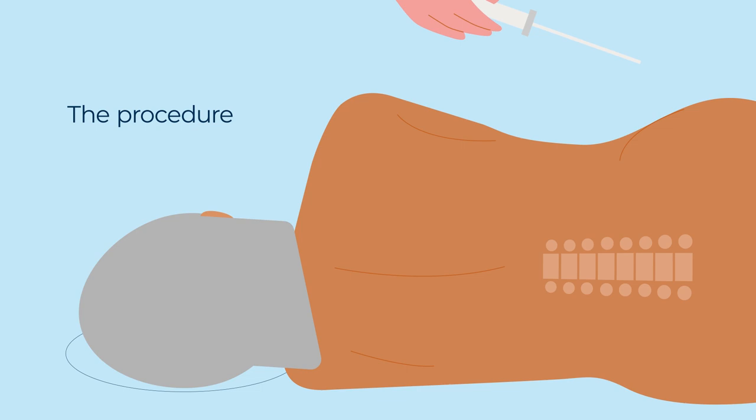Most people have an anaesthetic injected into or around the spine. This blocks feeling from your waist down and you'll stay awake.